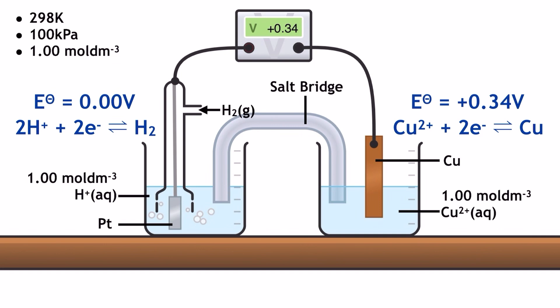With further labels, we can see that the copper half cell is the cathode — the positive electrode — and the hydrogen half cell is the anode — the negative electrode. These roles can be allocated using the standard electrode potential values. Since the copper half cell has a more positive standard electrode potential, it has a greater tendency to accept electrons than the hydrogen half cell. We could also say that the copper redox system's position of equilibrium is further to the right than the hydrogen's.